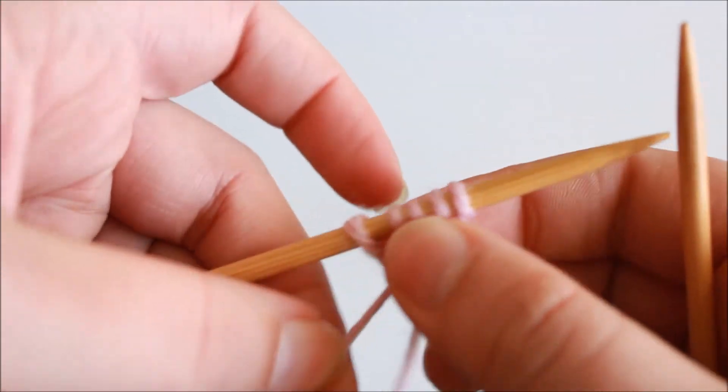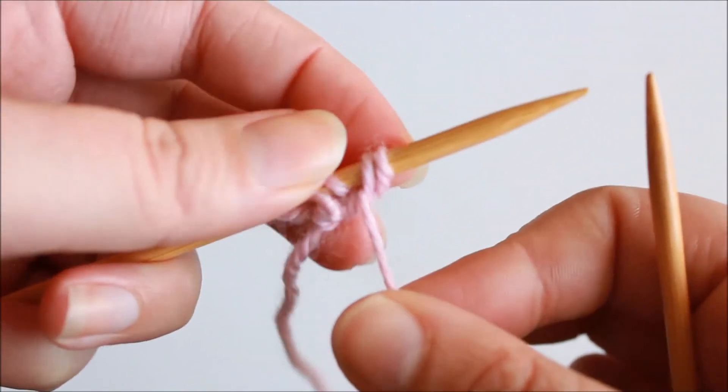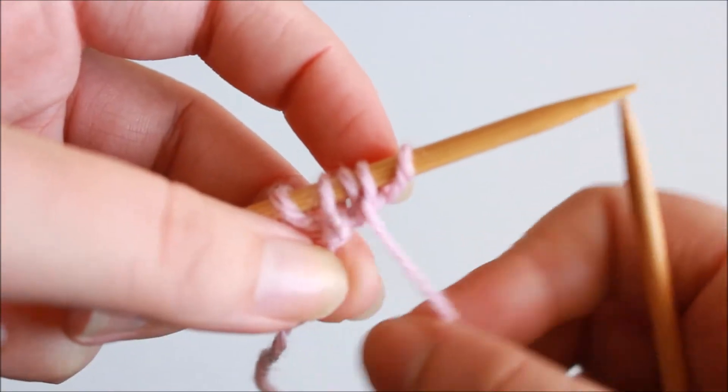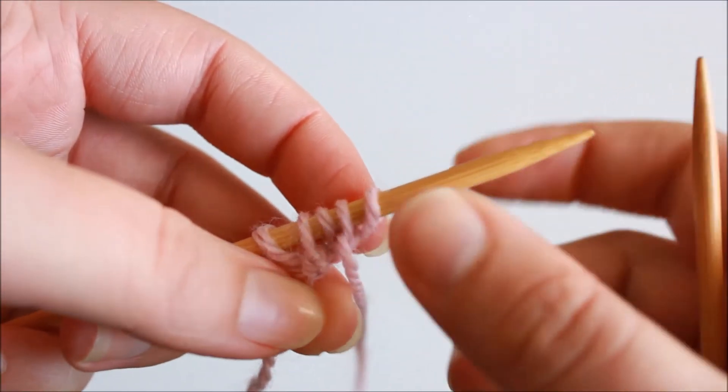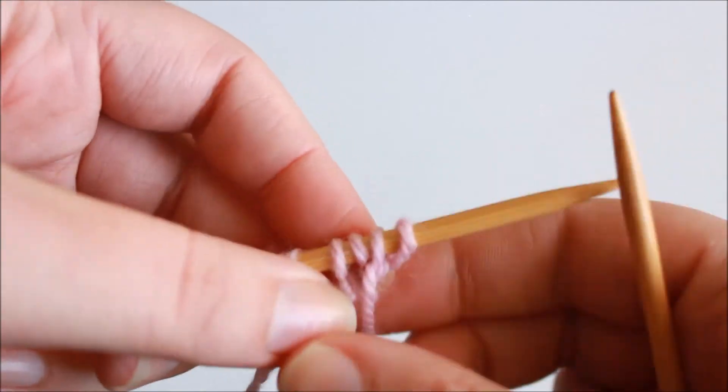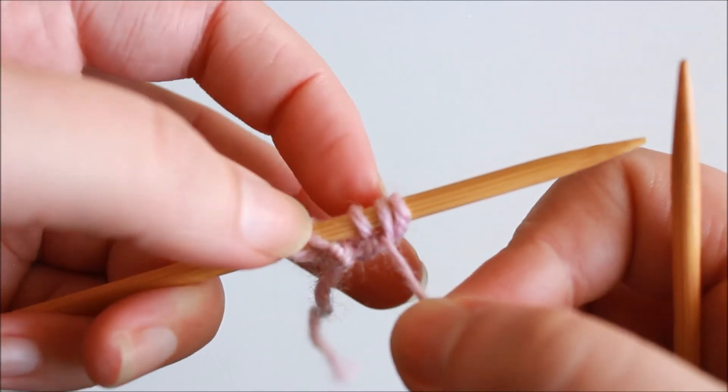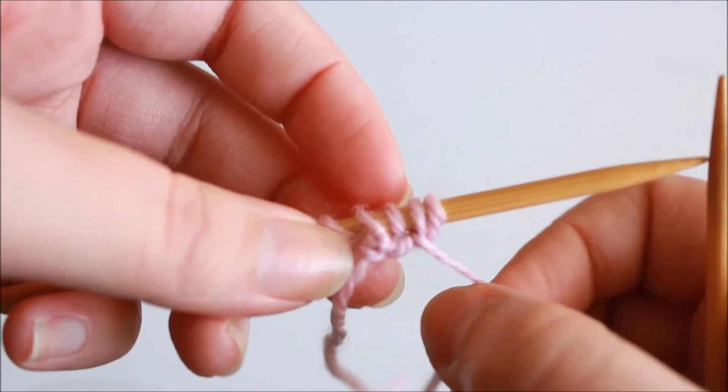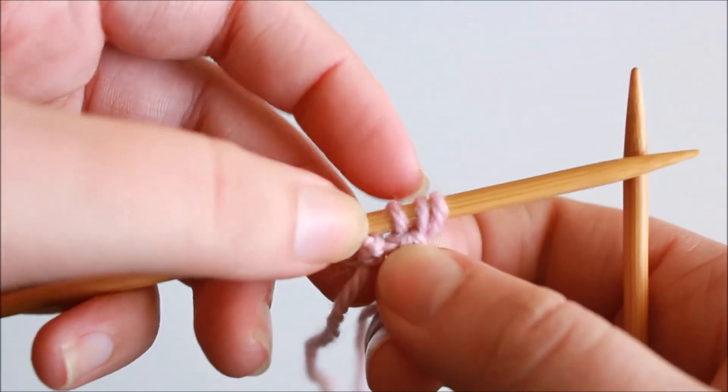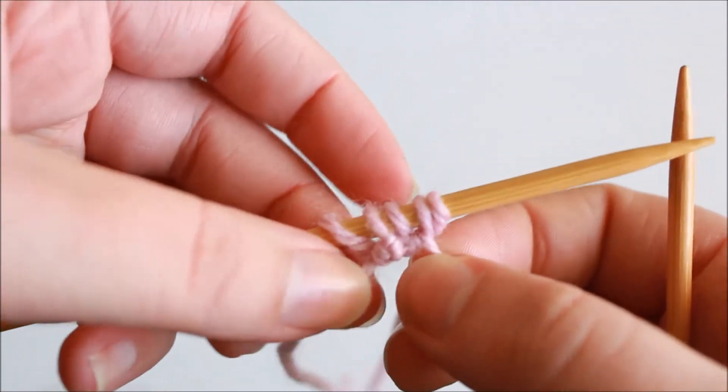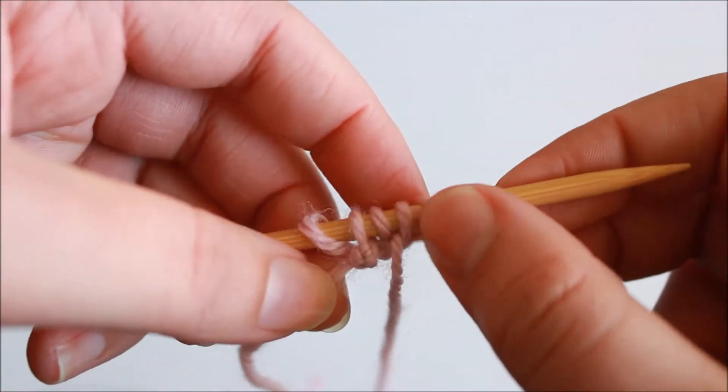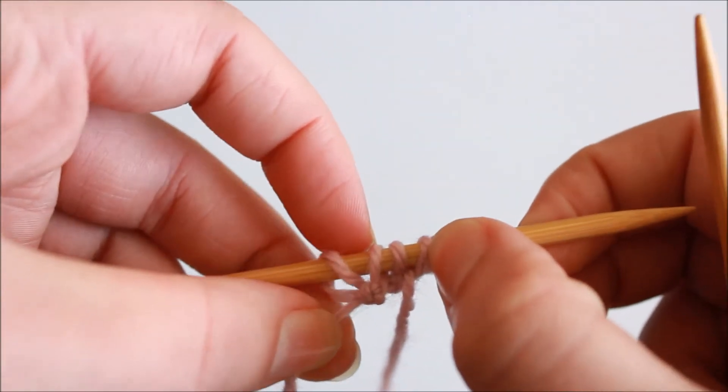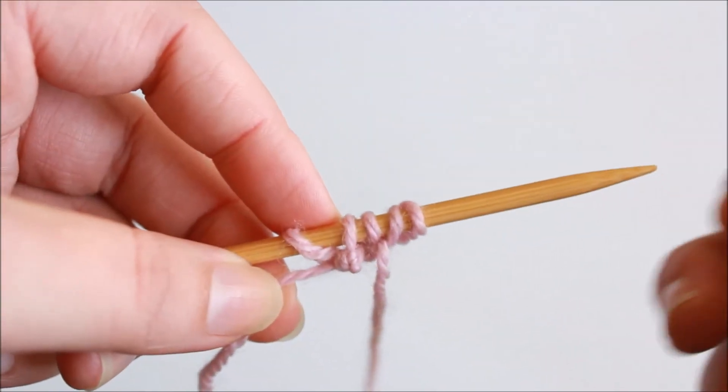Now if I was working a flat piece of knitting as these stitches are facing me I would probably want to work these stitches here as knit stitches and then the ones that are sort of recessed back as purl stitches which means I would be working this odd number of stitches as a purl one knit one rib to the last stitch and then this would be a purl one.